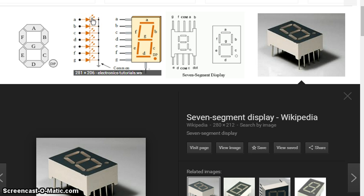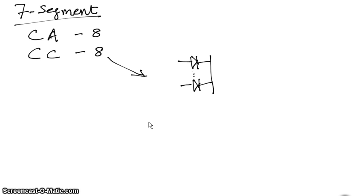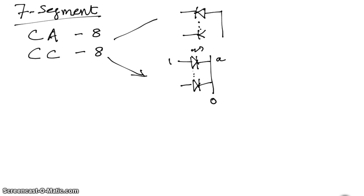For common cathode, the cathodes are grounded together. If you provide a logic 1 and the common pin is permanently at zero, the particular LED will turn on. So if this is segment A, segment A will be on. For common anode, the anode pins are grouped together and the cathode is used for control. When you provide a logic 0 to a segment, that segment will turn on.